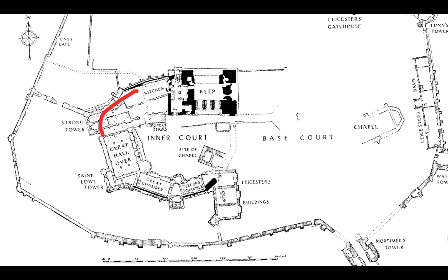John of Gaunt is also responsible for two further developments worth knowing about: Saint Lowe Tower and the State Apartments. These held living apartments, first for staff in the Saint Lowe Tower and then for the lord and his family in the State Apartments.